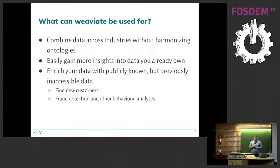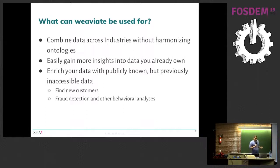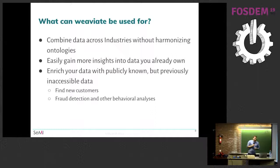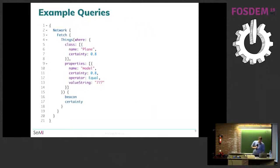Another example is fraud detection. A typical machine learning example is spam detection — you have a list of bad words and if they appear in your email, it's probably spam. With a graph and structured knowledge, you can take this much further: not just matching words but including behavior, and you can use that for fraud detection or any other kind of behavioral analysis.